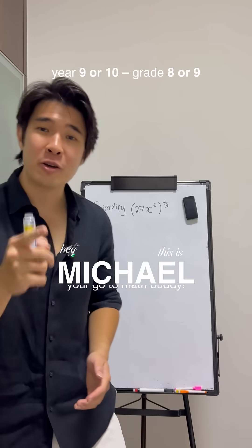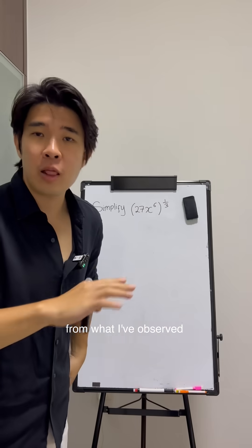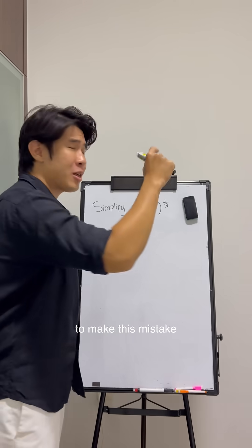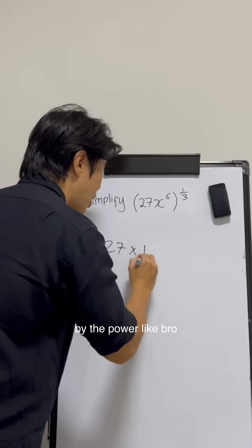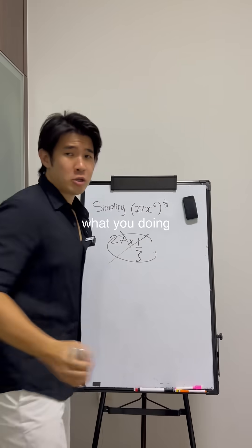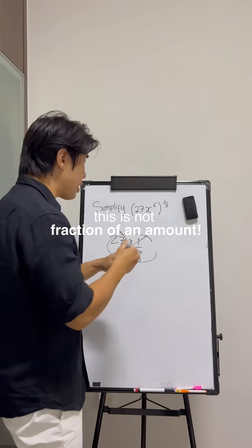Hey, this is Michael here, GoToMathBuddy. From what I've observed from a lot of students, they tend to make this mistake of multiplying the coefficient, which is 27, by the power. Like, bro, what are you doing? This is not how fractional exponents work.